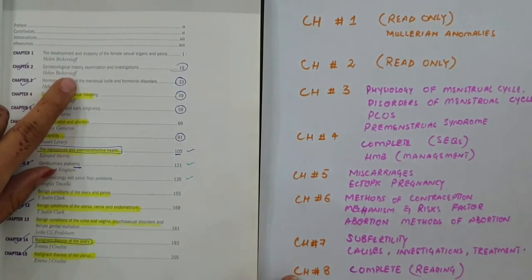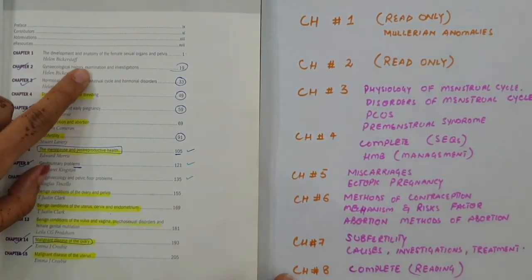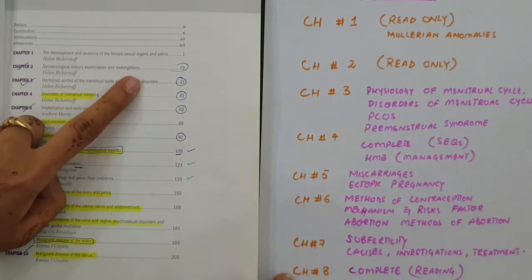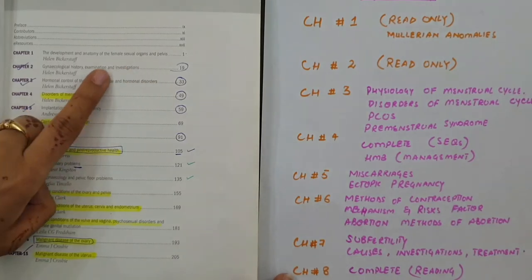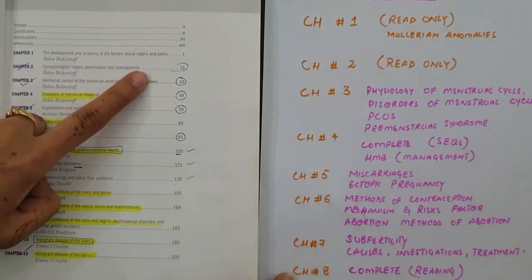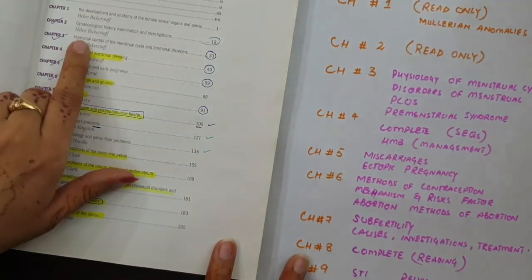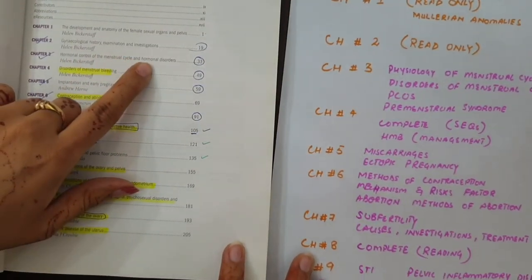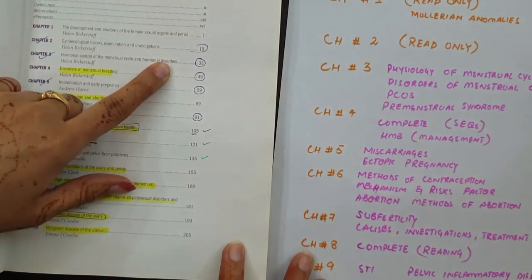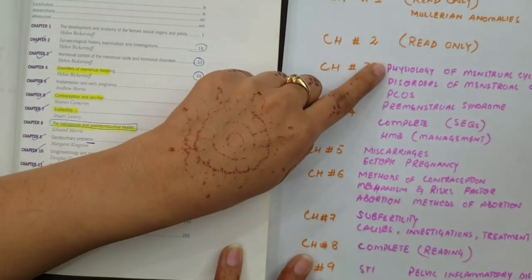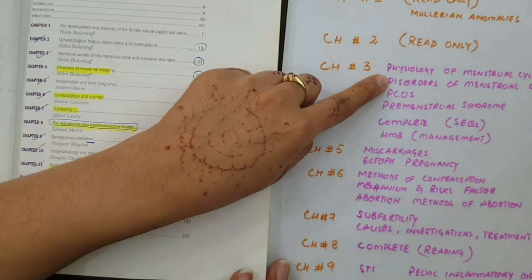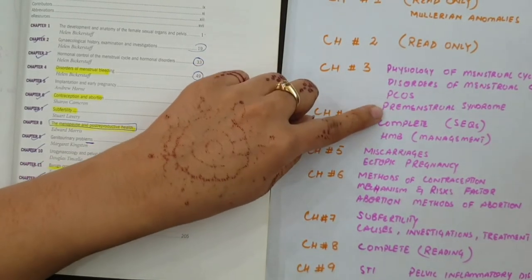The second chapter is Gynecological History, Examination and Investigations. In the ward you will know that you only have to read in general about it. The third chapter is Hormonal Control of the Menstrual Cycle and Hormonal Disorders. The physiology of menstrual cycle is important, disorder of menstrual cycle, then PCOS and premenstrual syndrome. These are four important topics.